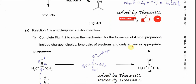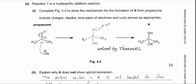For the mechanism of reaction 1, which is a nucleophilic addition reaction: complete figure 4.2 to show the mechanism for the formation of compound A, the cyanohydrin. The propanone and cyanide ion are given with the lone pair and charge. First, put the dipole on the carbonyl group — partial positive on the carbon, partial negative on oxygen. Then draw one arrow from the lone pair on the cyanide carbon pointing to the partial positive carbon in propanone, since this is the site attracting the nucleophile.